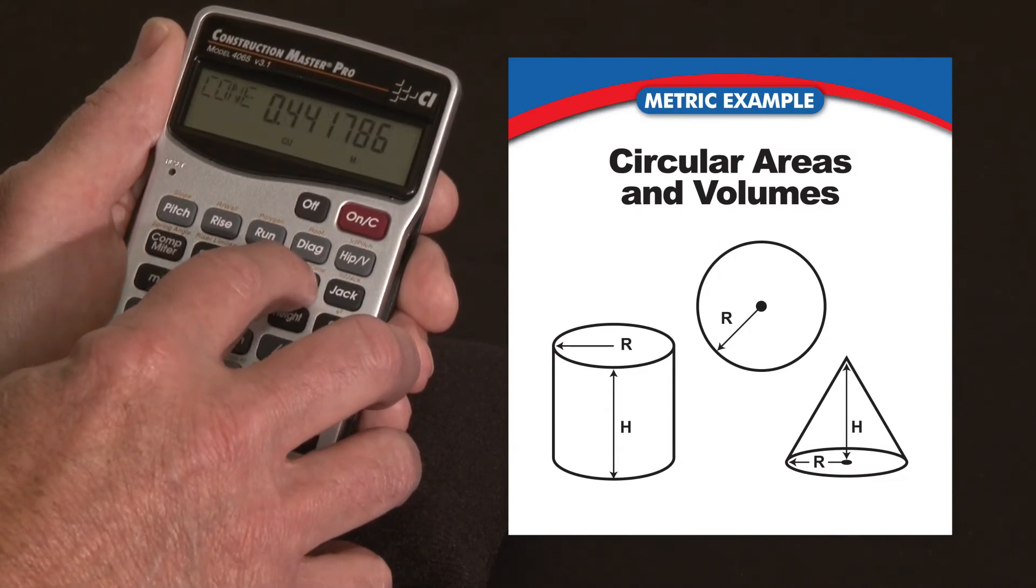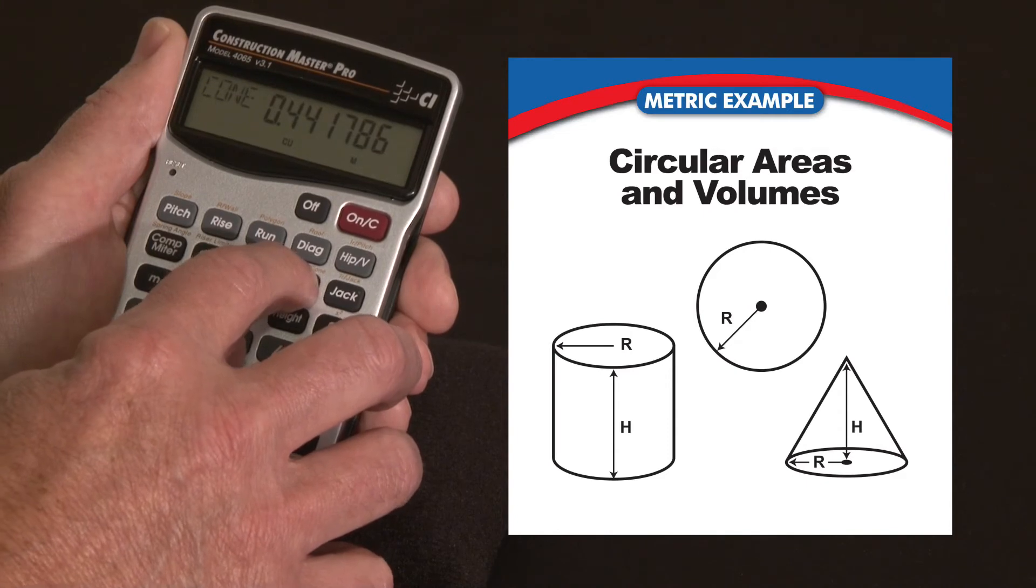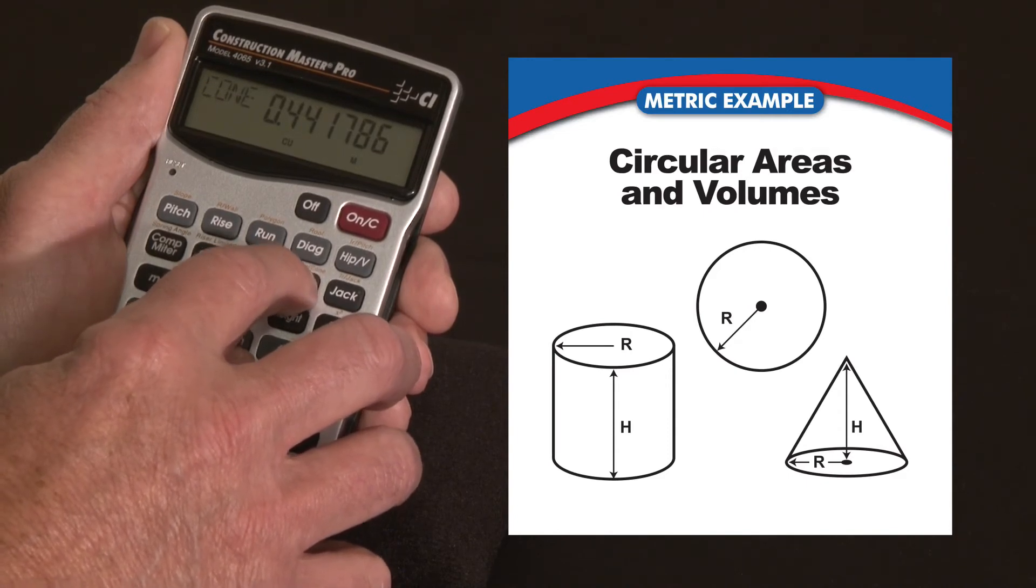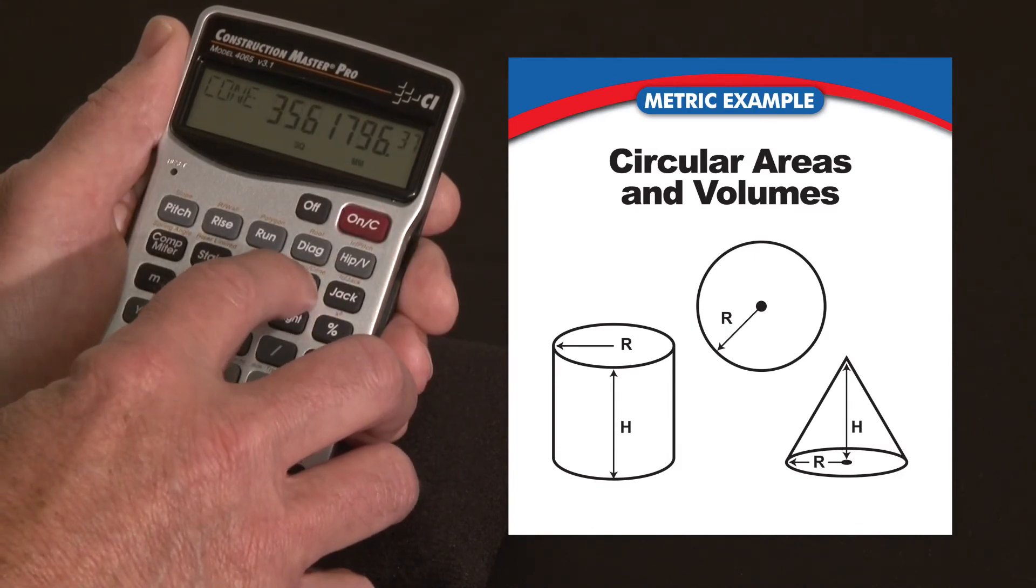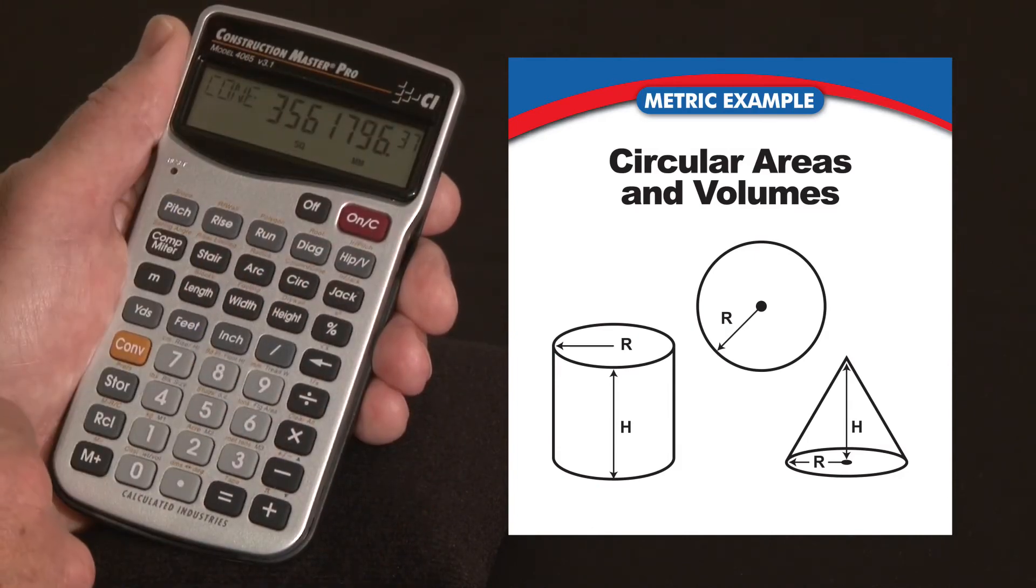The next press is cone volume, so if I had a cone-shaped pile or object of this height and that diameter, that's how much cubic meters of volume there is within it, and what the surface area around it is as well.